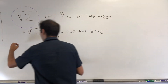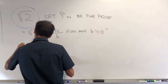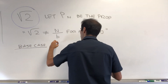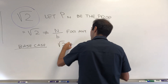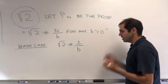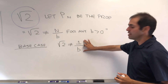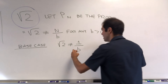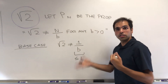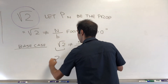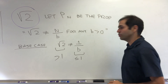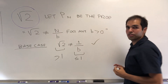Let's do the base case. Is it true that square root of two cannot be written in the form 1 over b for any positive b? Well yes, because 1 over b is less than or equal to 1, but square root of two—since two is bigger than one—is strictly bigger than one. So you cannot write square root of two as 1 over some positive integer.